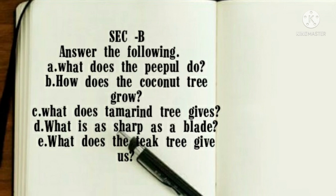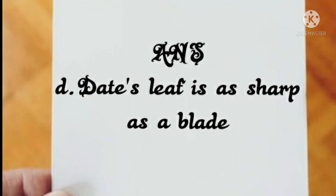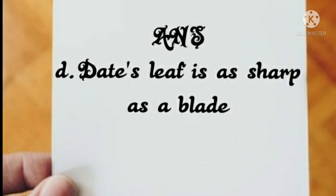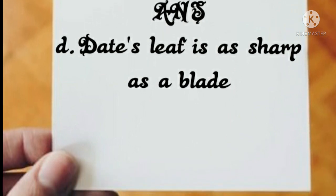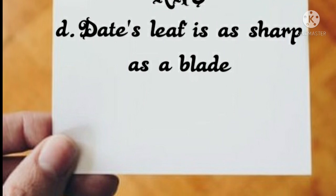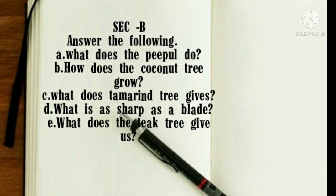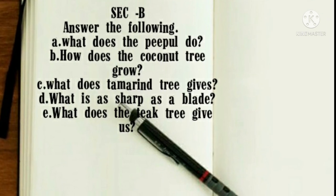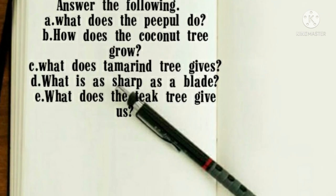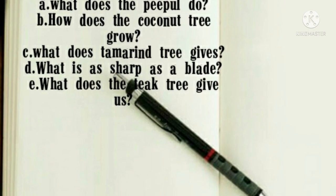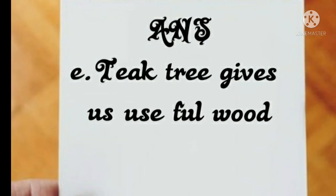What is sharp as a blade? The teak tree's leaf is sharp as a blade. The describing word is 'sharp.' The teak tree gives us useful wood.